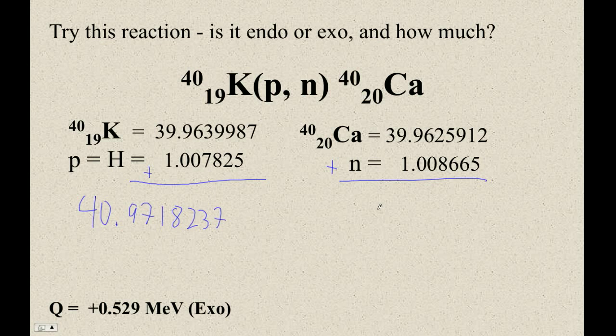Plus 1.008665. You see all the future accountants. They're the ones that get these problems right the first time. 40.971262562.